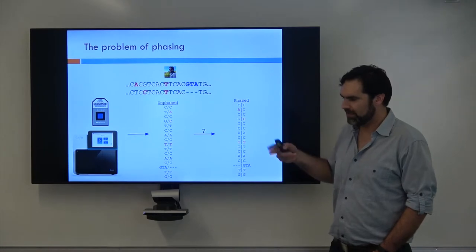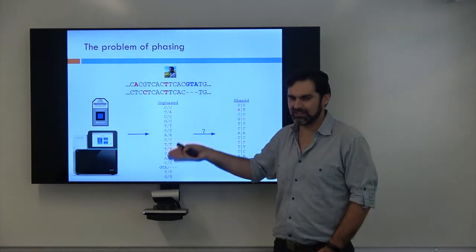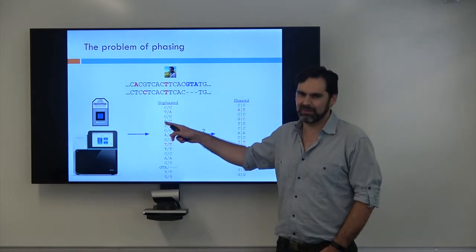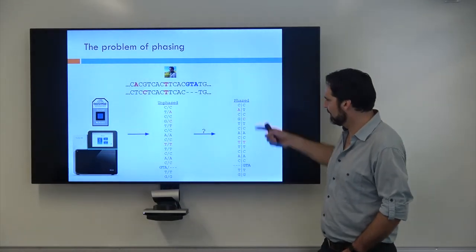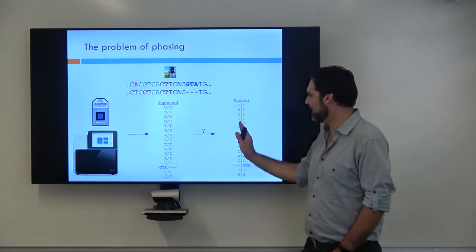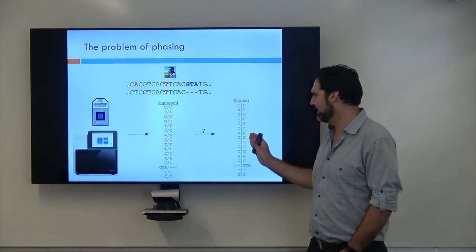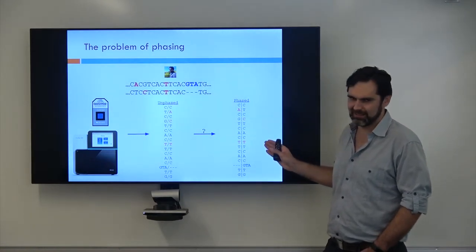So here, in our standard notation, if you ever see a genotype that has this dashed line in it, it means you don't know what the phase is. Whereas if it's this pipeline, it means we know what the phase is. So everything on the left side of this pipeline is on one of my chromosomes, and everything on the right side is on the other chromosome.